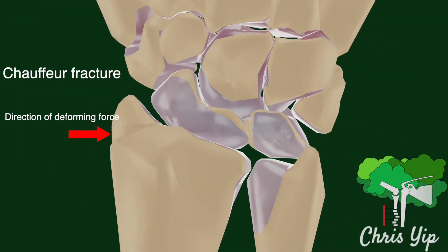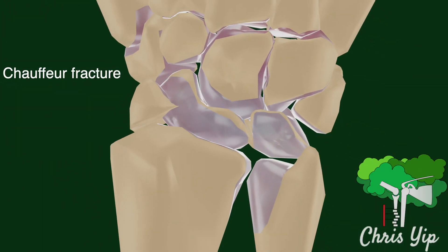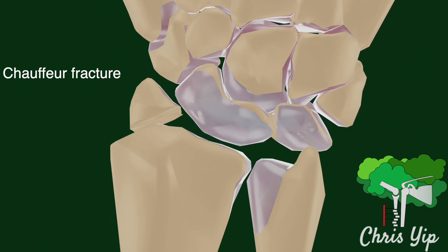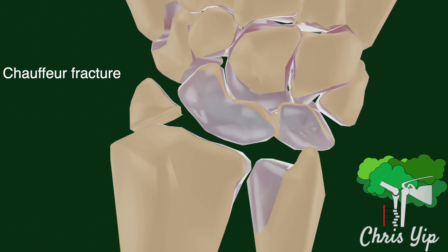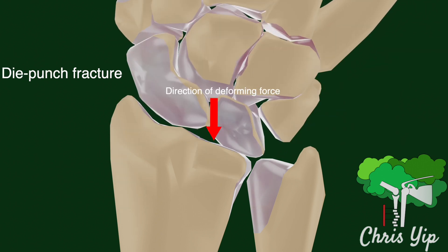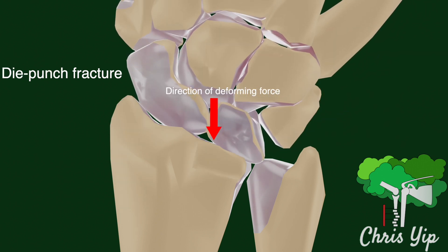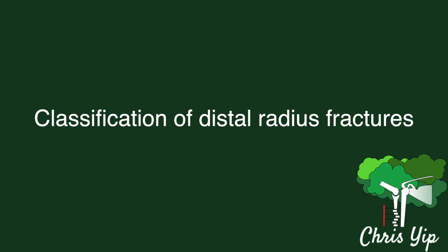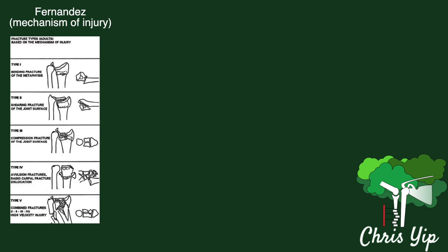A Chauffeur fracture involves a fracture of the radial styloid and results in the ulnar displacement of the carpus. A die-punch fracture results from axial loading onto the radius, resulting in a depression in the lunate fossa.